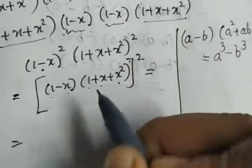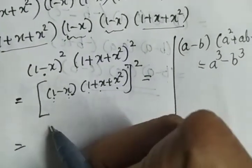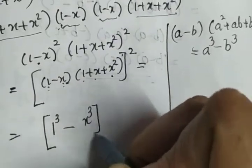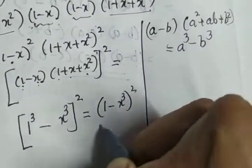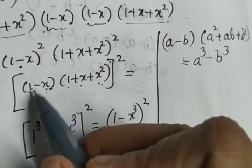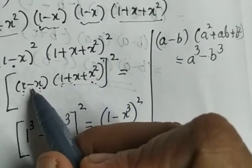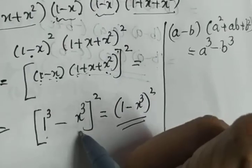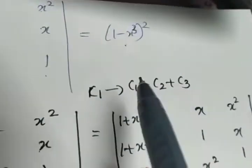With a = 1 and b = x, the identity gives (1 - x)(1 + x + x²) = 1³ - x³ = 1 - x³. So the whole expression equals (1 - x³)², which is our RHS. If you forget this identity during your exam, you can just multiply out all terms — many terms will cancel — and you will still get 1 - x³, giving the final answer (1 - x³)².